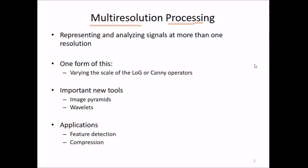One form we've already seen is varying the scale of the Laplacian of Gaussian and Canny operators, where sigma, the standard deviation, can be varied to change the operator scale. There are various important new tools, such as image pyramids and wavelets, with applications in feature detection and compression.